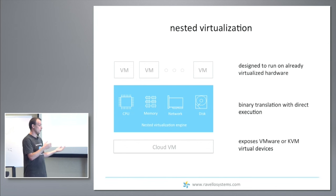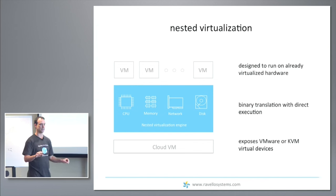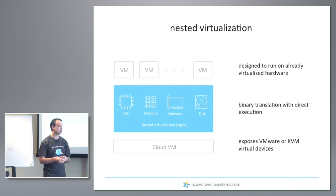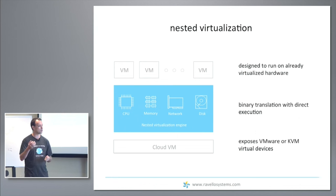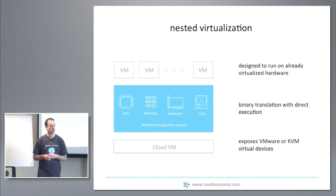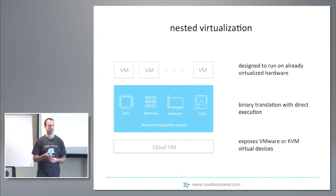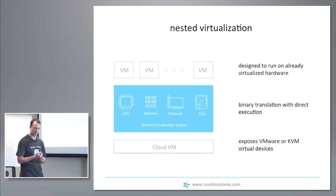We want to run any VM without making any changes or conversions to it. So what we're doing is binary translation with direct execution, similar to the way VMware started in the late 90s. All user space code runs directly, untranslated, on the CPU. Privileged code goes through translation, and we have many optimizations in place to ensure it runs and performs well.